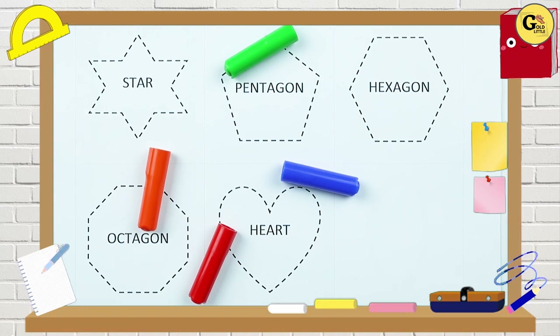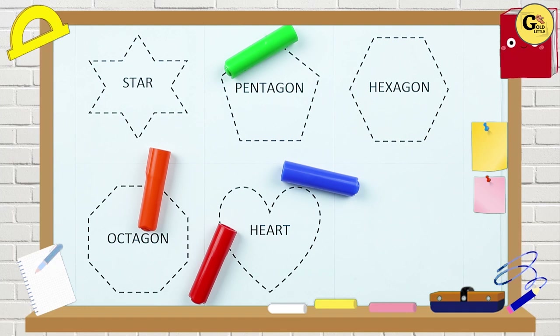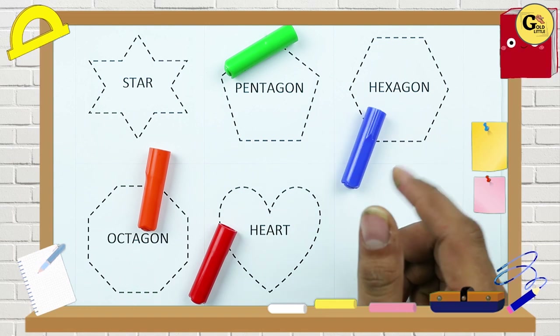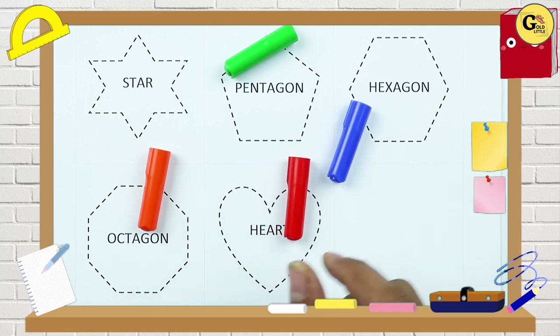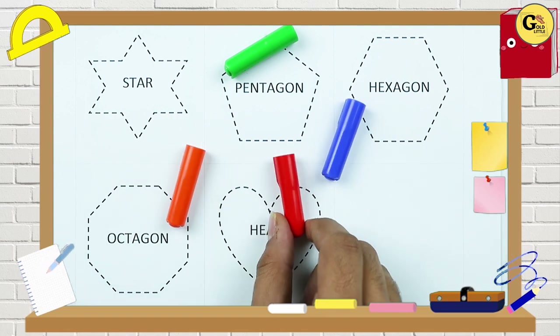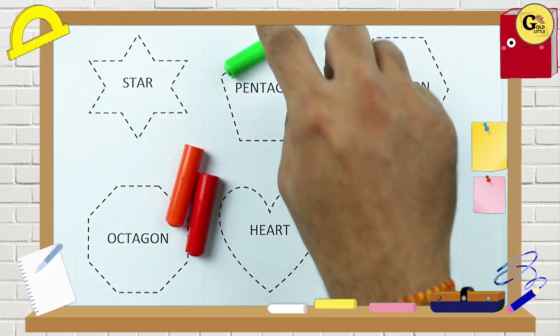Hello friends, today we learn shapes: star, pentagon, hexagon, octagon, and heart, with colors — blue color, orange color, red color.